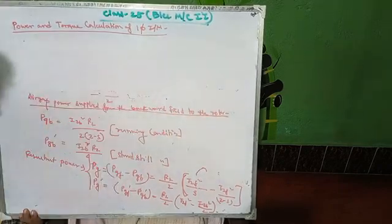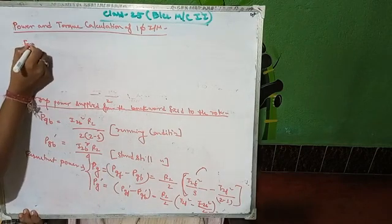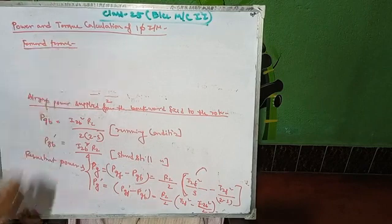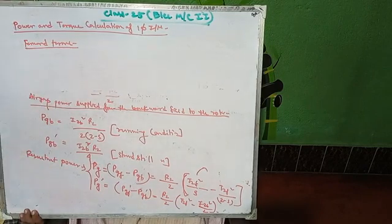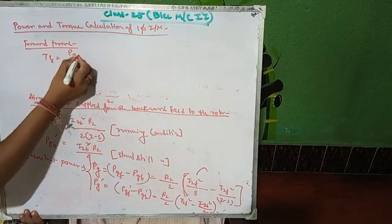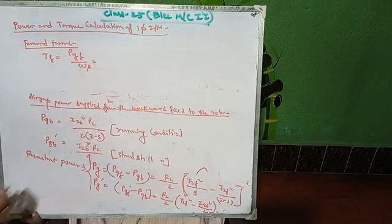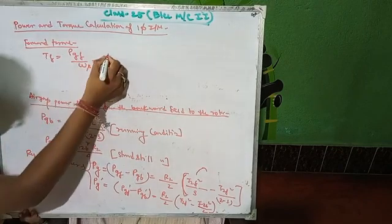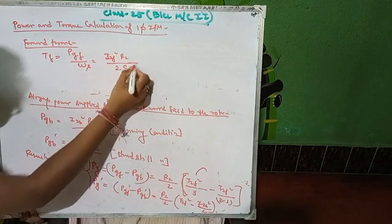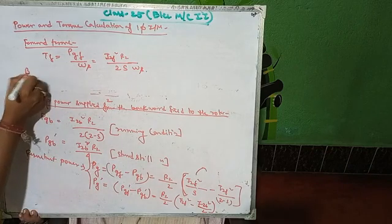Now let's write the relation between torque and power. The forward torque — torque produced by the forward field — is T_f equals P_gf divided by omega_s, which equals I2f squared times R2 divided by 2s times omega_s.